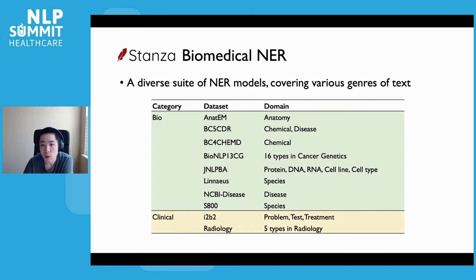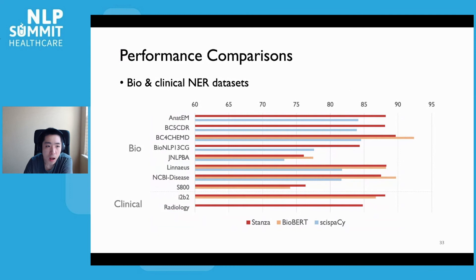For NER in the biomedical and clinical domains, we provide a diverse suite of pre-trained NER models covering various genres of text. We compare their performance to widely used scispaCy models and the very competitive BioBERT models, which are heavily pre-trained on large biomedical corpora. On all datasets, Stanza's NER models outperform scispaCy by a big margin, and are very competitive with BioBERT's strong performance, despite being shipped in much more lightweight packages that are faster and easier to run. It is also worth noting we released a radiology report NER model trained on expert annotated reports, exclusively available for the Stanza toolkit.